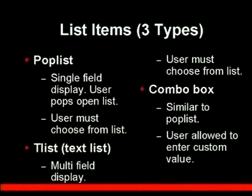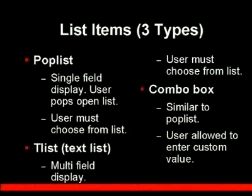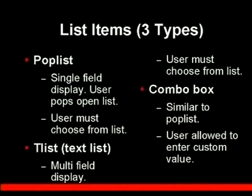Here are the three types of list items. A pop-list is a single field that's displayed, the user opens the list, and must choose from an element of the list. A t-list can display more than one item at a time — this is a more popular style on the web, but you can use it anywhere. It means you can see three or four of the items at a time, even though the user only chooses one. The combo box is similar to the pop list and looks exactly the same, except one of the choices is blank and the user can type in a value which is not in that list. That's the key decision between pop list and combo box.